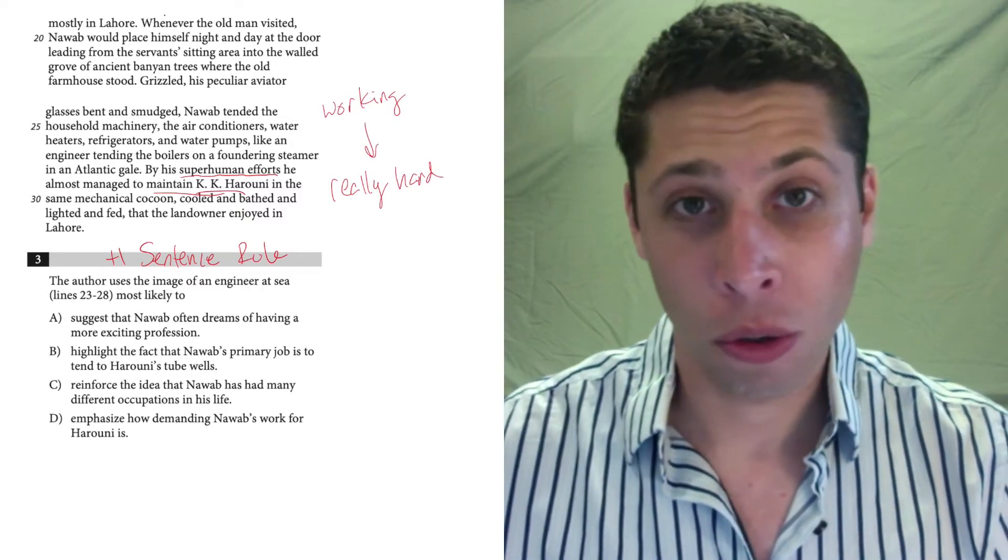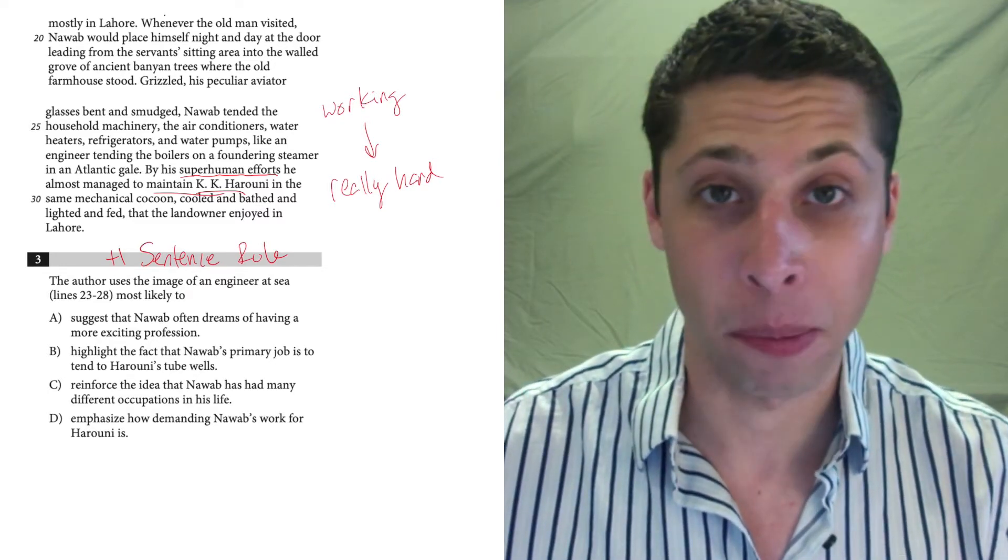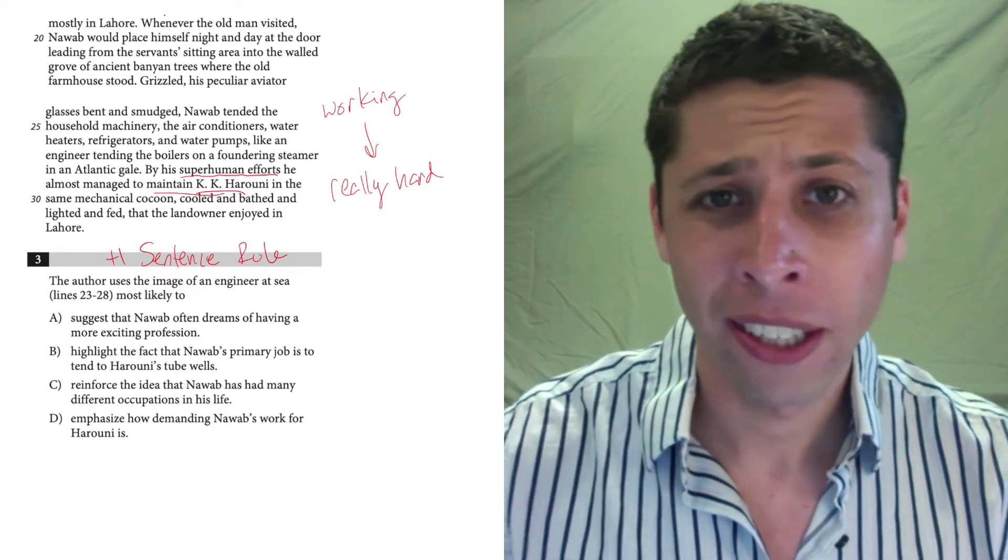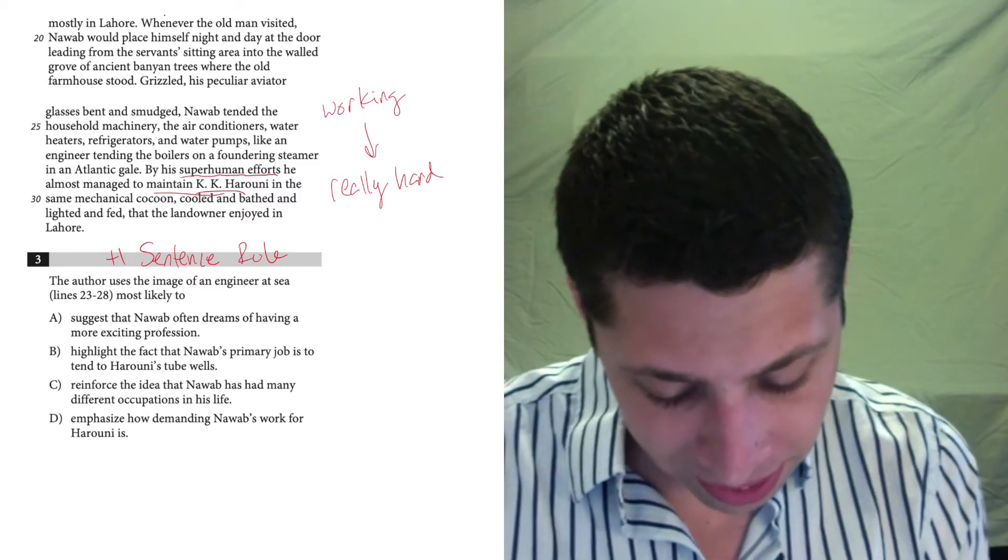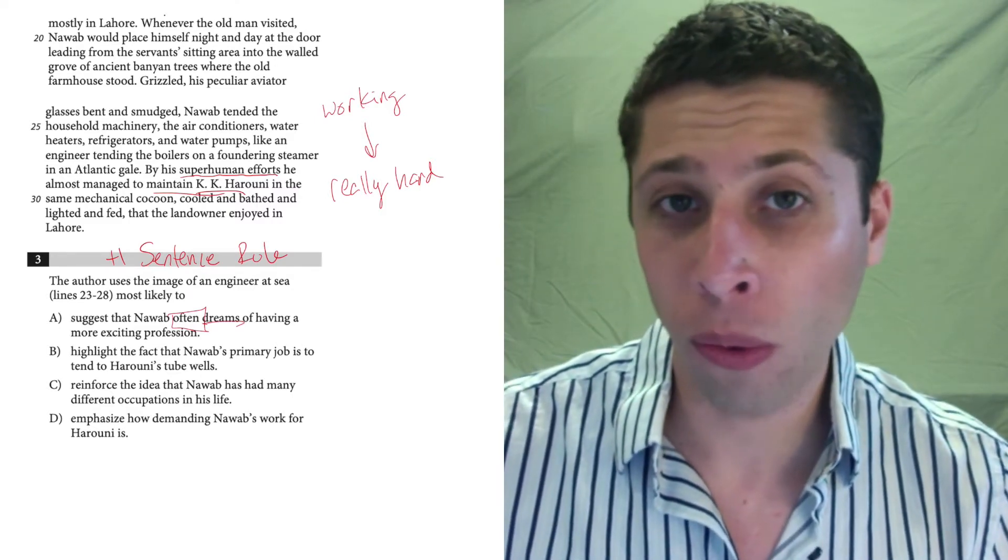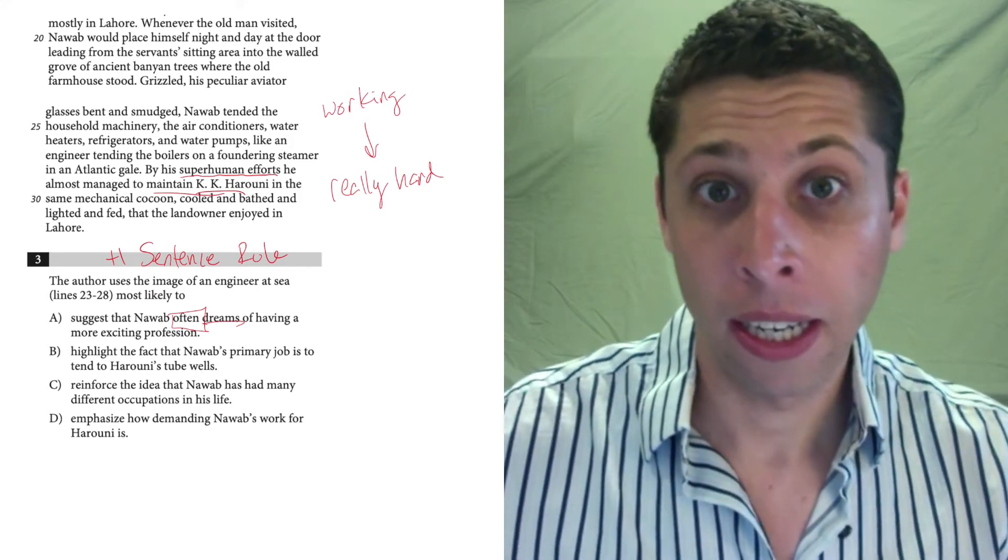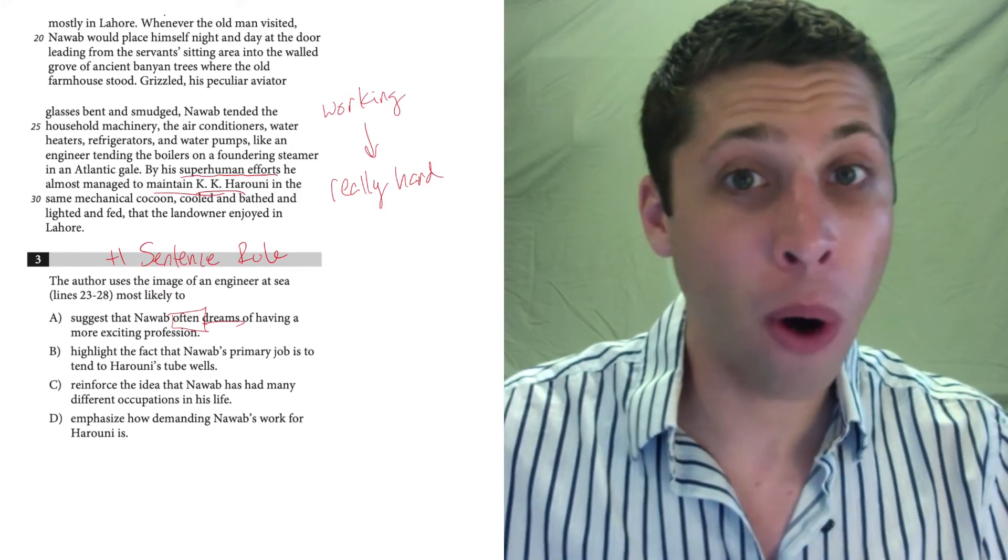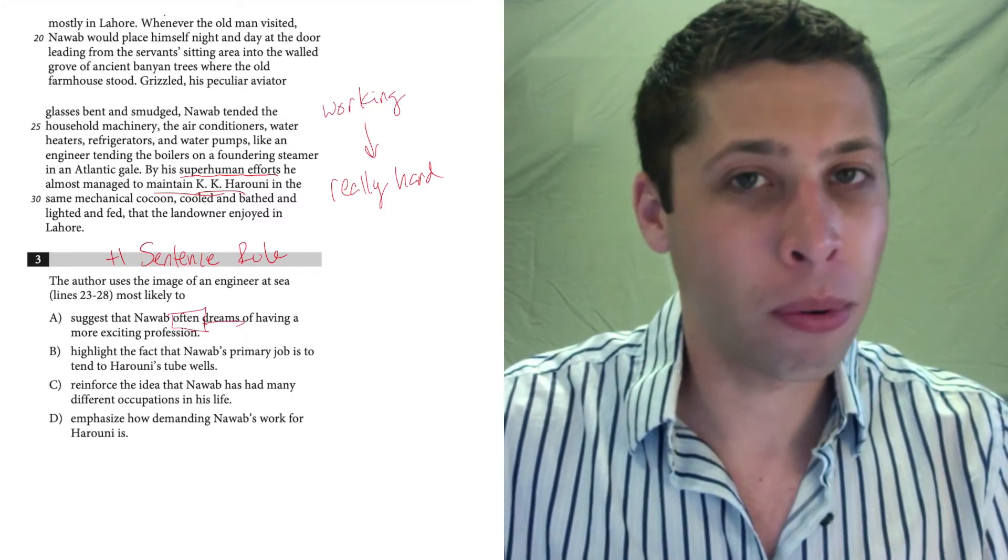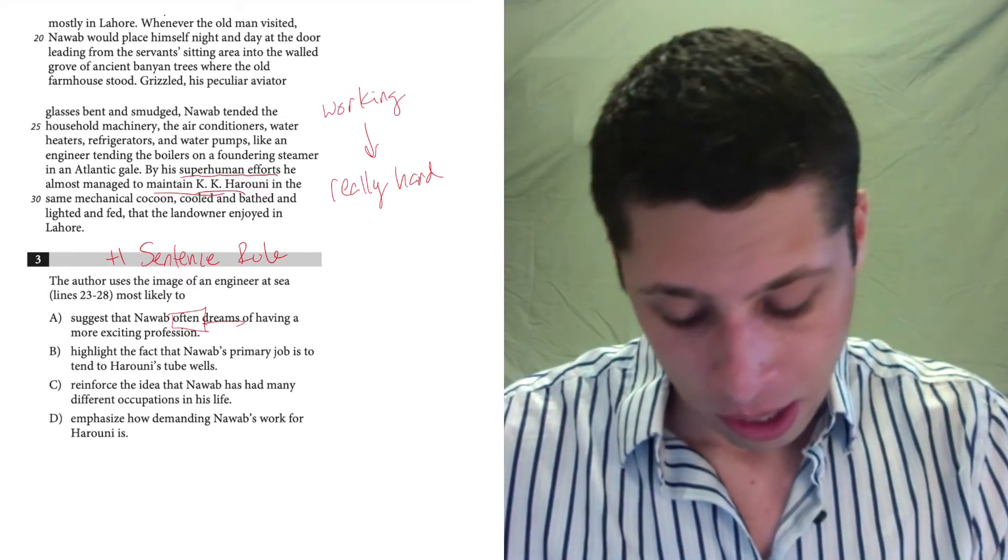Now let's look at the answer choices and see what matches with what we read. Choice A suggests that Nawab often dreams of having a more exciting profession. No, they're not being literal here. He doesn't literally want to be an engineer in a gale. They're just using a metaphor. So he doesn't actually have that dream, but I'd also worry about the word often. This is one of those strong words that gives number to a choice, right? Often means frequently, but we don't have any indication of how often he even does this or thinks of himself this way. So that is a problem word in and of itself. Something to keep in mind. You're going to see this come up on a lot of SAT reading questions. So that gets rid of choice A.